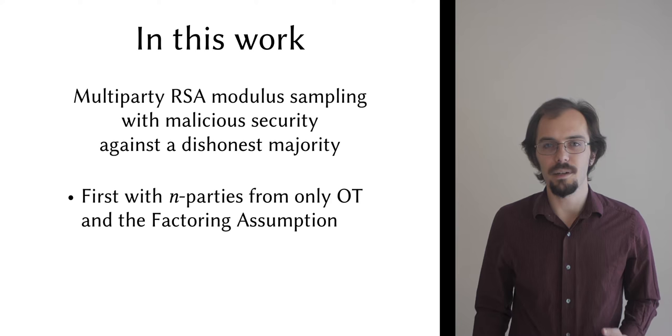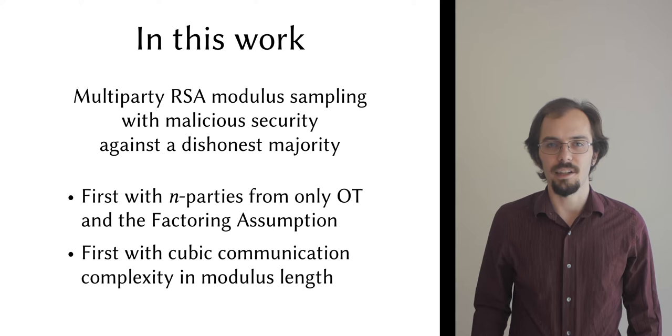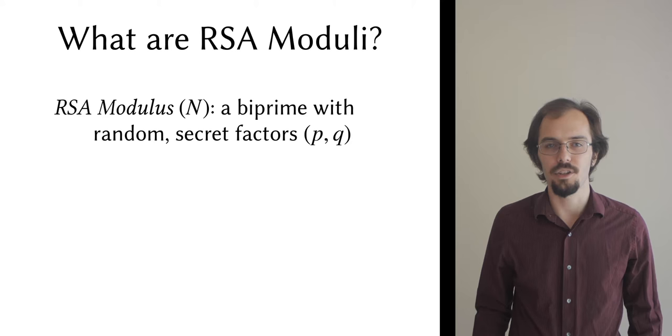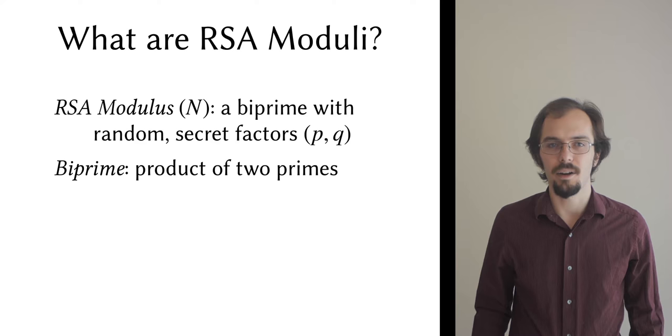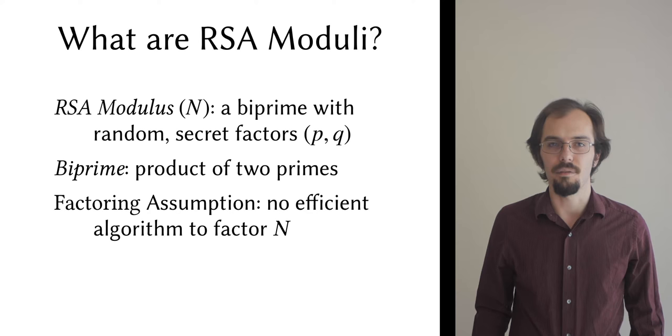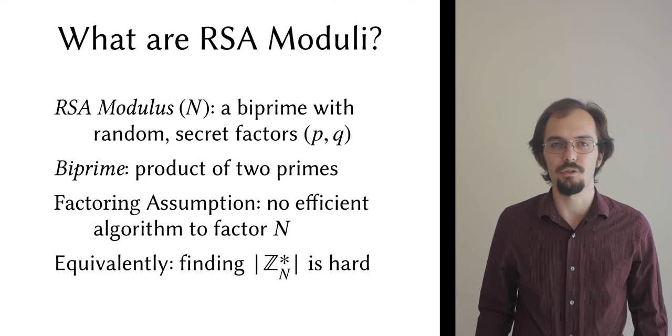An RSA modulus, usually designated by the variable n, is the product of two large randomly chosen primes which we call p and q. We call such numbers biprimes. It is one of the oldest public key assumptions we have that factoring such numbers is hard, and when used as a modulus, they form multiplicative groups wherein finding the group order is equivalent to factoring.